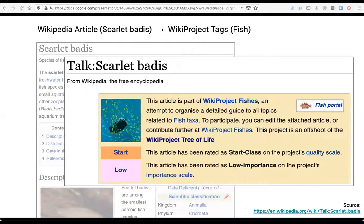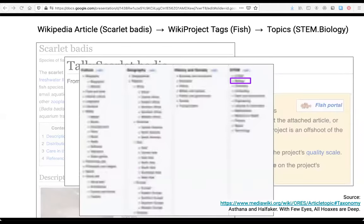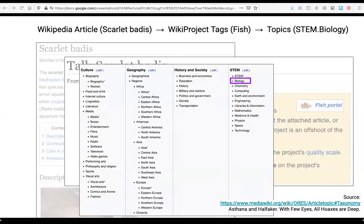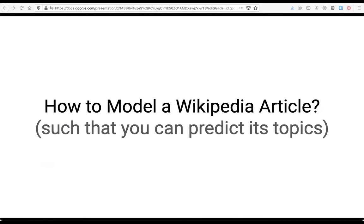But fish is still a pretty specific topic and we'd like to go even higher level than that. Again, luckily for us, English Wikipedia has just this mapping that relates these wiki projects to one or more of 64 different kind of high level topics. And this was an approach that was devised by Astana and Hafiker in their 2018 CSCW paper, and we adopted here. So this is all well and good. But what about articles that haven't been tagged by English wiki projects or articles in other languages? And this is the problem we tackle in this paper, how to model Wikipedia article such that you can predict its topics. And this isn't a new problem, and there are many ways to approach it. So I'm going to walk you through a few.